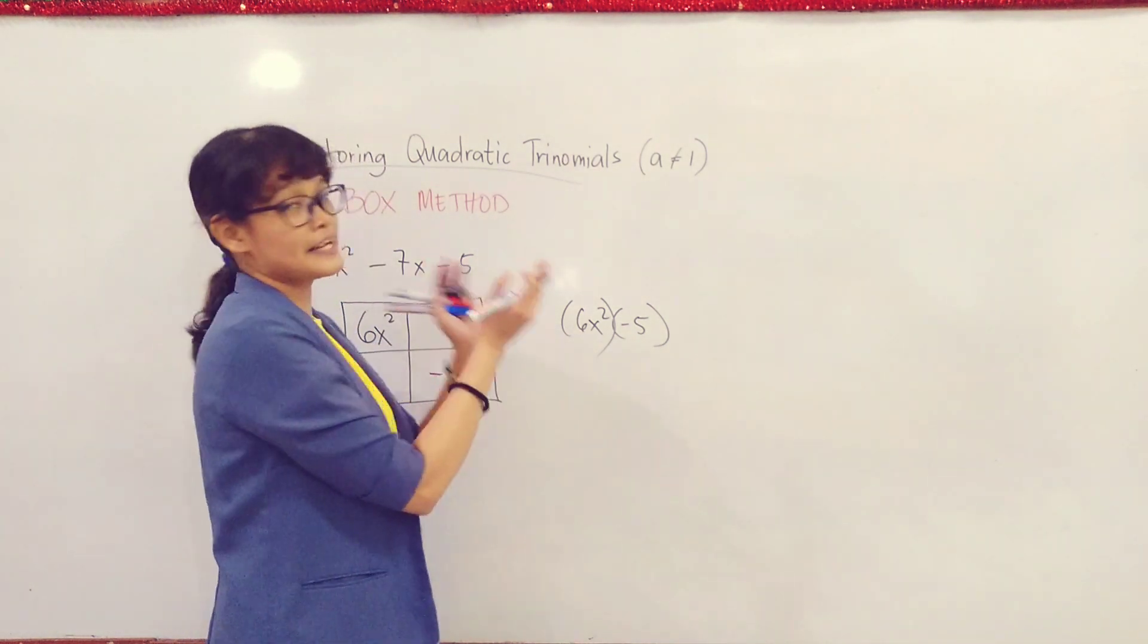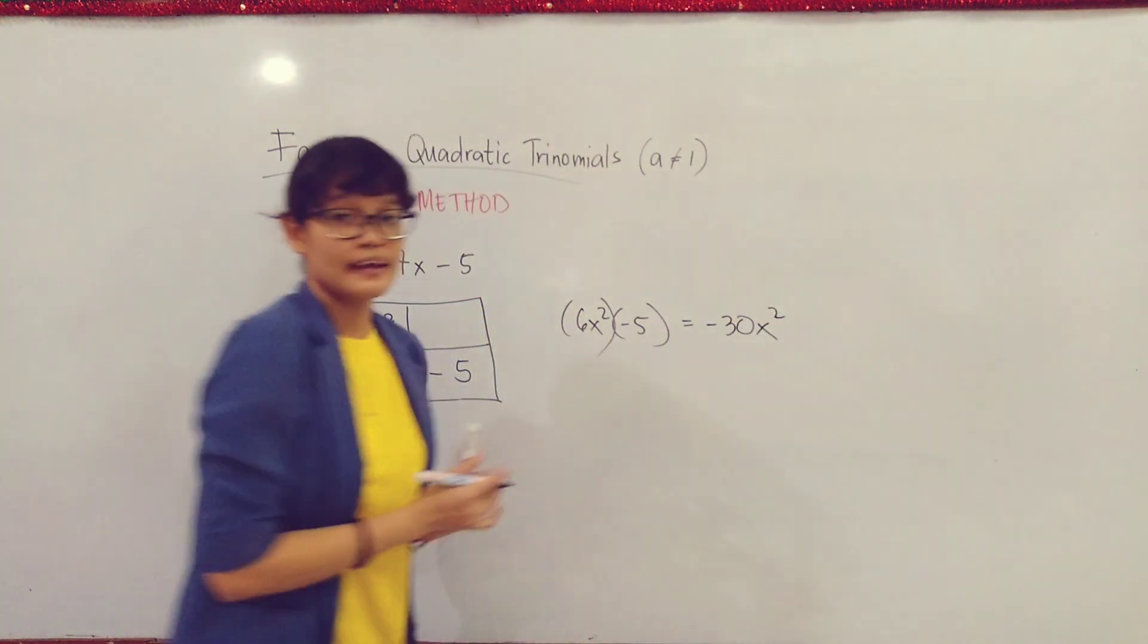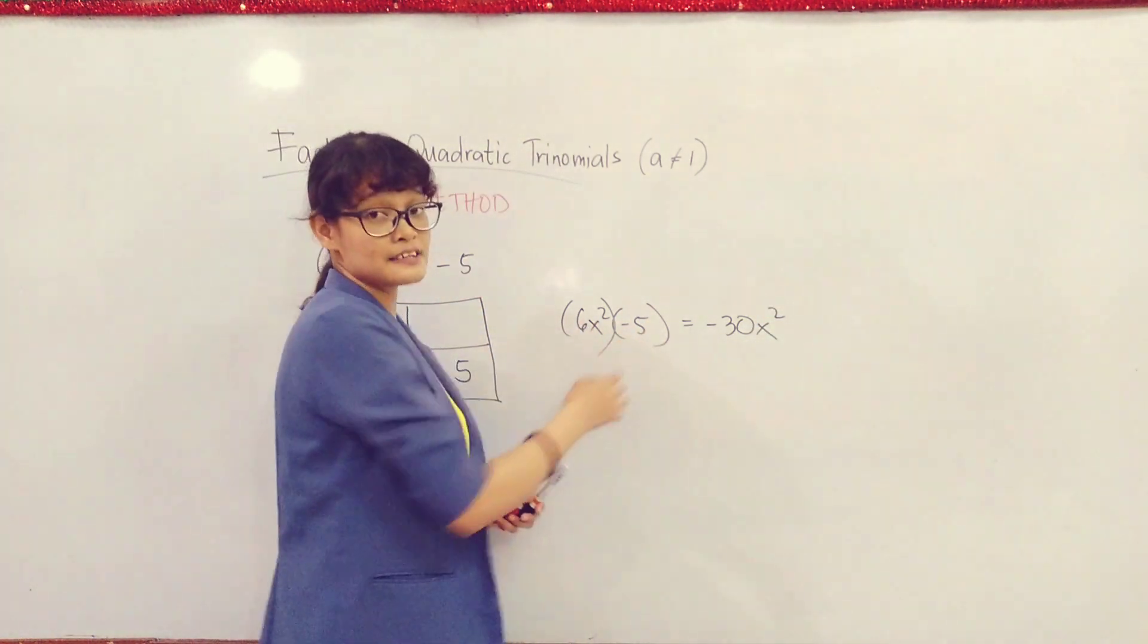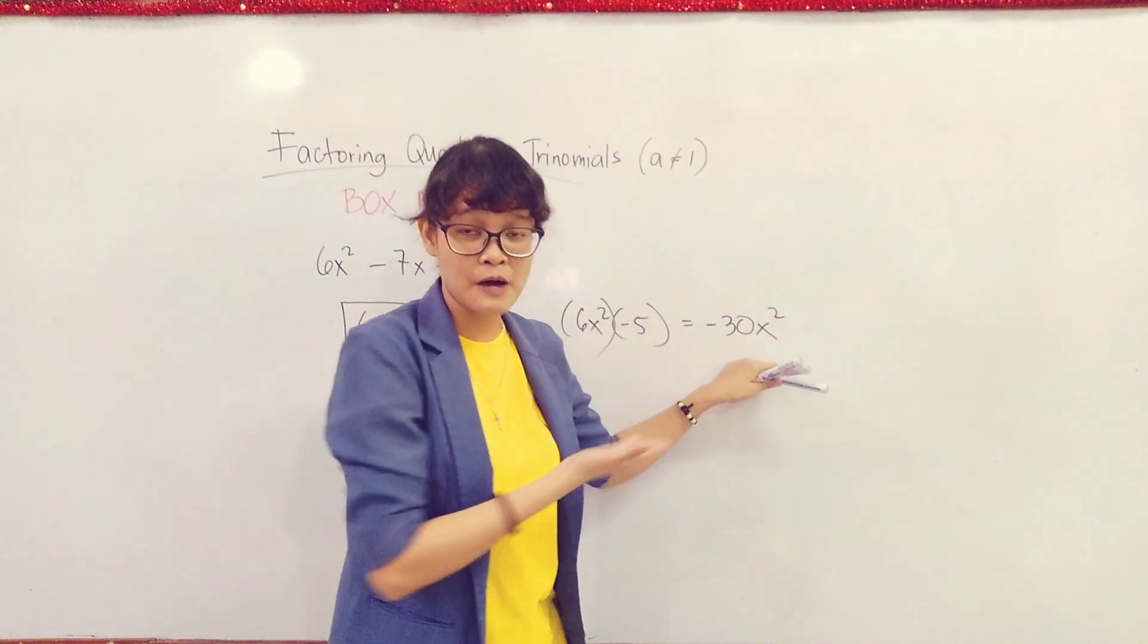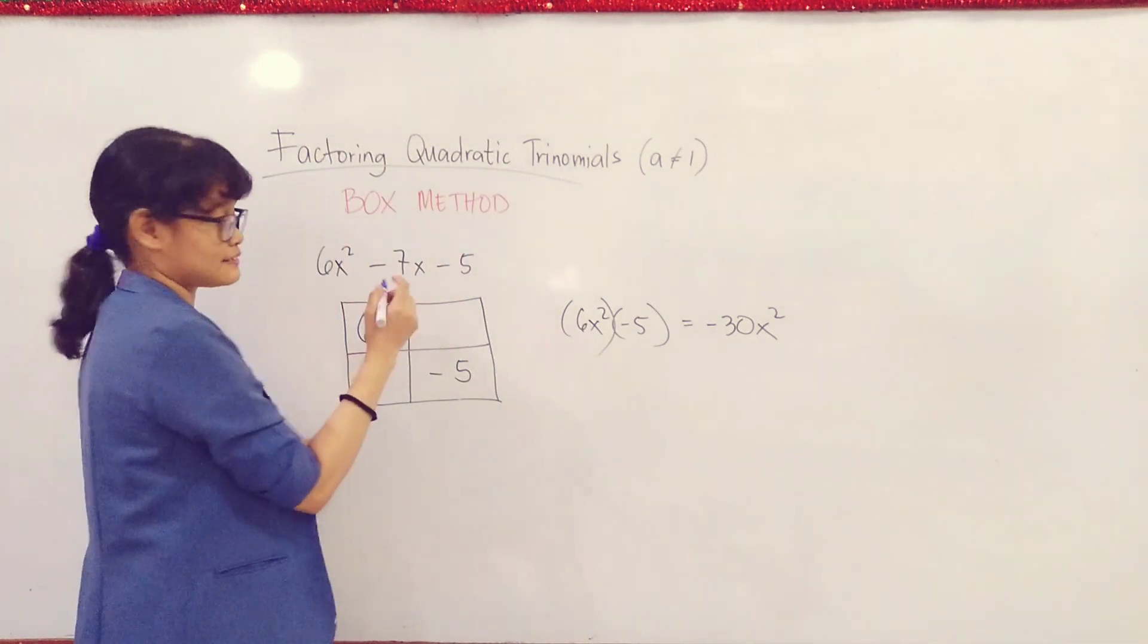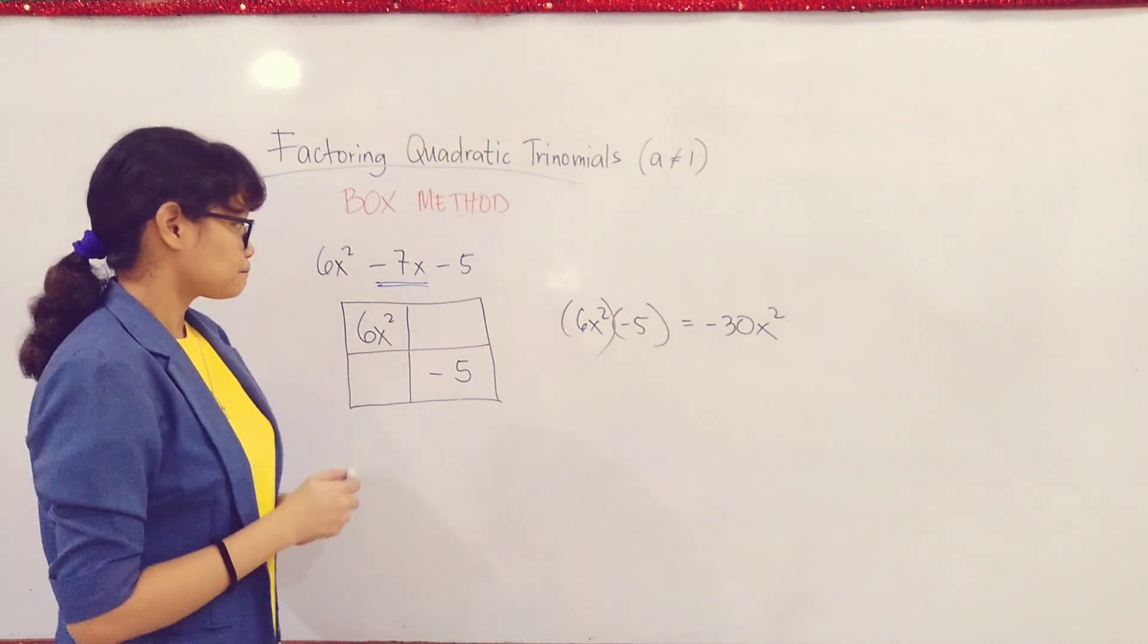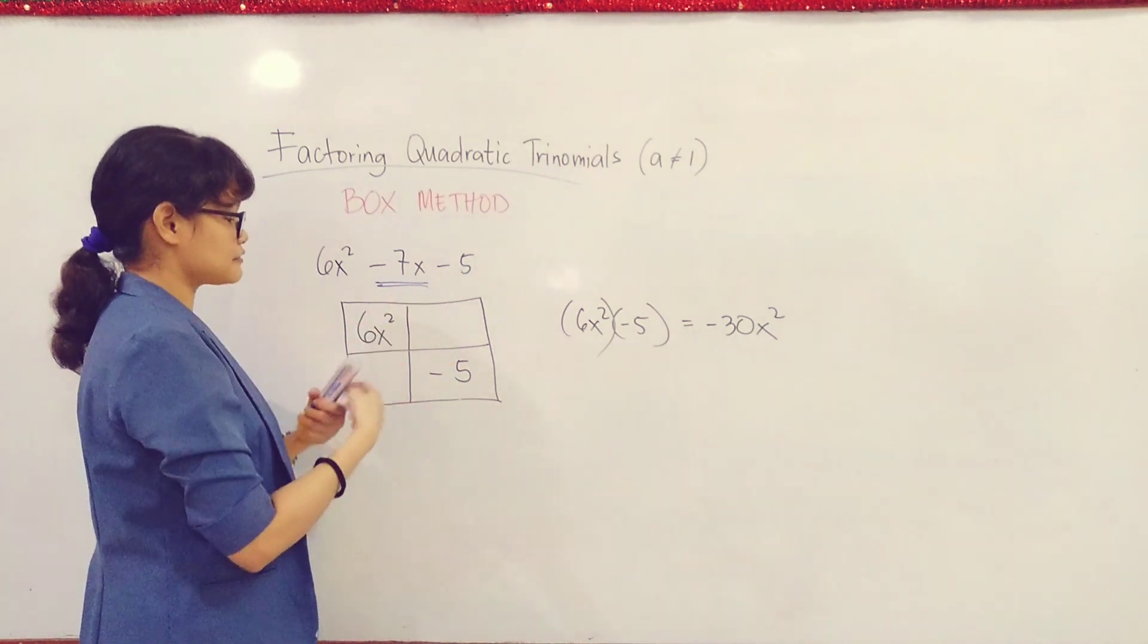After making a box, we will place the first and last terms. So you have 6x² here, and negative 5 here. What is the product of 6x² and -5? This is equal to -30x². Now, after getting the product of the first and last terms, we will find its factors that when added will equal the middle term of the quadratic trinomial. For this case, it should equal -7x.